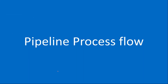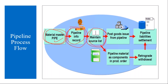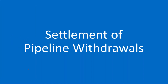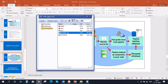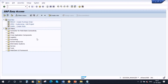Now we will see the pipeline process flow in the system. First you create a material master with material type PIPE, then you maintain a pipeline info record with category pipeline. You can also maintain a source list if required — this is optional. Then you directly consume it by posting a goods issue, which creates a liability — you will have to make the payment to the vendor. That is the basic flow; it is very simple. Now let's see this flow in the system — I am logging on to an S4 HANA system to create a material.